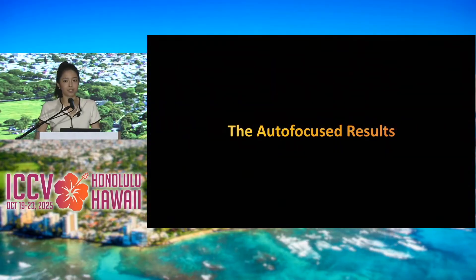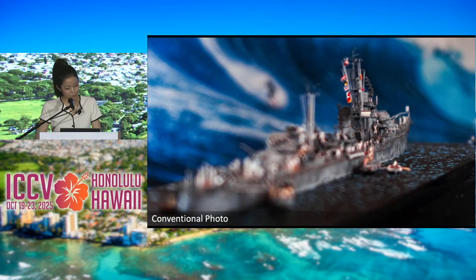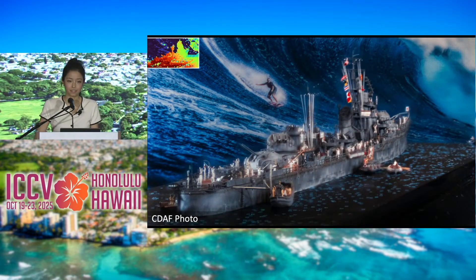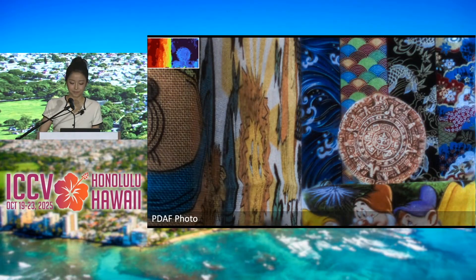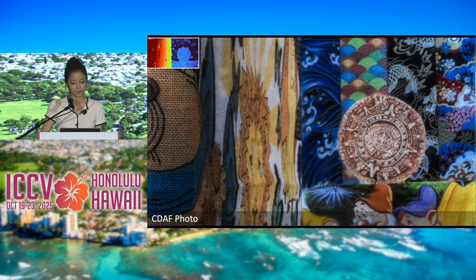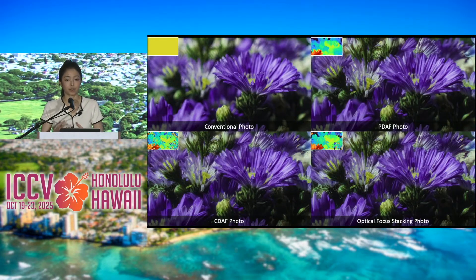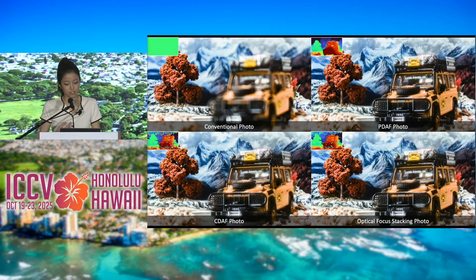Both of our autofocus techniques work across a variety of scenes. For a model ship where the front is in extreme defocus, PDAF resolves focusing everywhere while outputting a depth map, and CDAF does the same, though the focus map is noisier due to textureless regions. We also show fabrics placed at different depths, comparing PDAF and CDAF results side by side with optical focus stacking, where a stack of images at different focus settings is used to compute the depth map and capture an all-in-focus image. Our methods match the image quality of focus stacking without requiring many images.